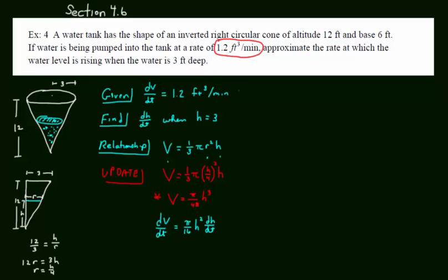Now it's just a matter of some plug and chug. I'm not crazy about this decimal, so I'm going to say 1.2 is actually 6/5. At the snapshot in time, the rate of change of volume is 6/5. I have π over 16. My h at the snapshot of time is 3 squared. And dh/dt is what we're trying to find, the rate at which the water level is rising.